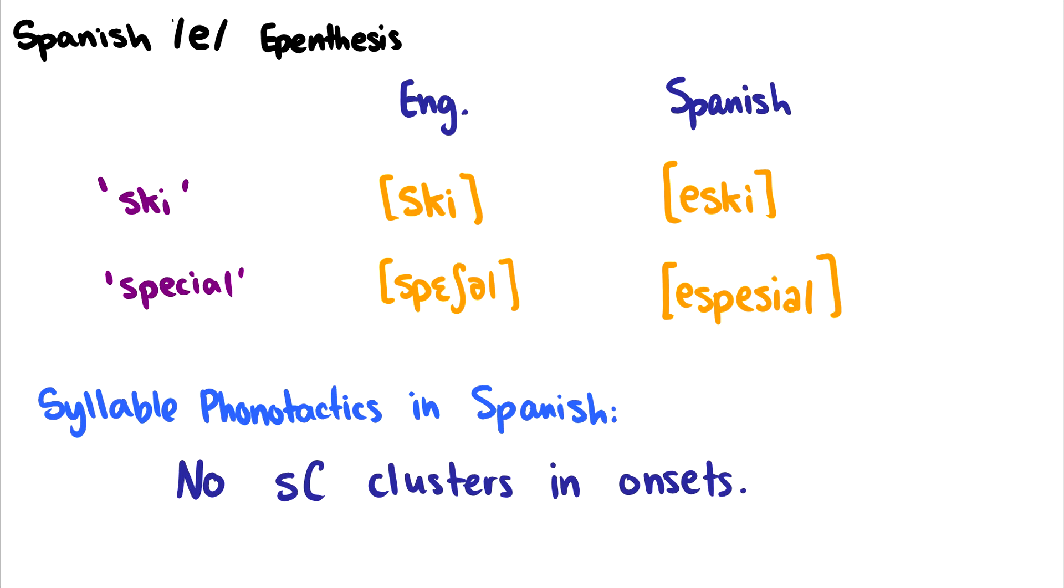Another process that I alluded to in the previous video is Spanish epenthesis. I have two words, and they're pretty similar in English and Spanish, but there is a very crucial difference. In English, we can say something like ski, while in Spanish, they would say esqui. In English, we say special, while in Spanish, they would say especial. In order to really talk about why this occurs, we have to talk about Spanish phonotactics. Spanish phonotactics is a little bit different from English phonotactics in that they cannot have SC clusters in onsets. They can't have SK in an onset, they can't have SP in an onset, they cannot have ST in an onset. This is not acceptable in Spanish.